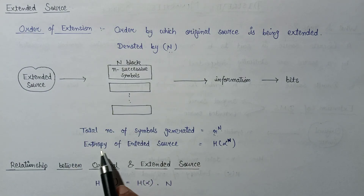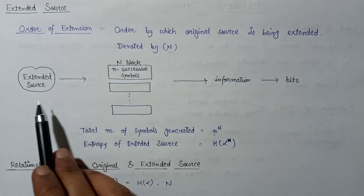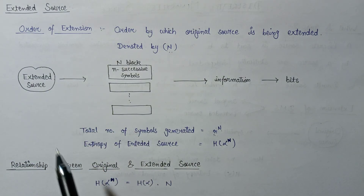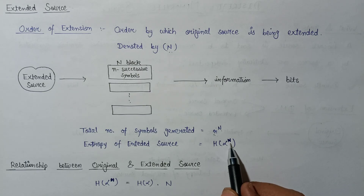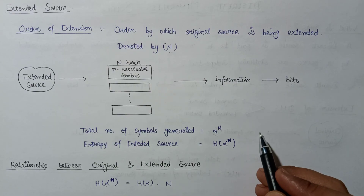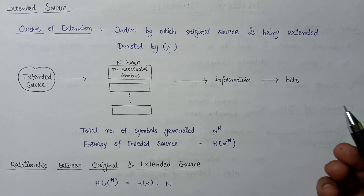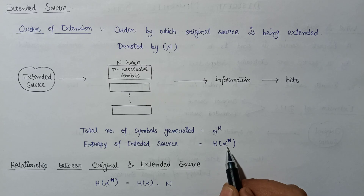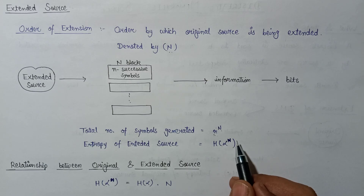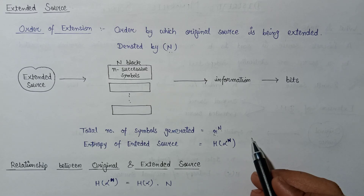The entropy of the extended source is represented as H(α^N). For example, if we want to calculate the second-order extension, we simply write H(α²), where 2 represents the second order of extension.